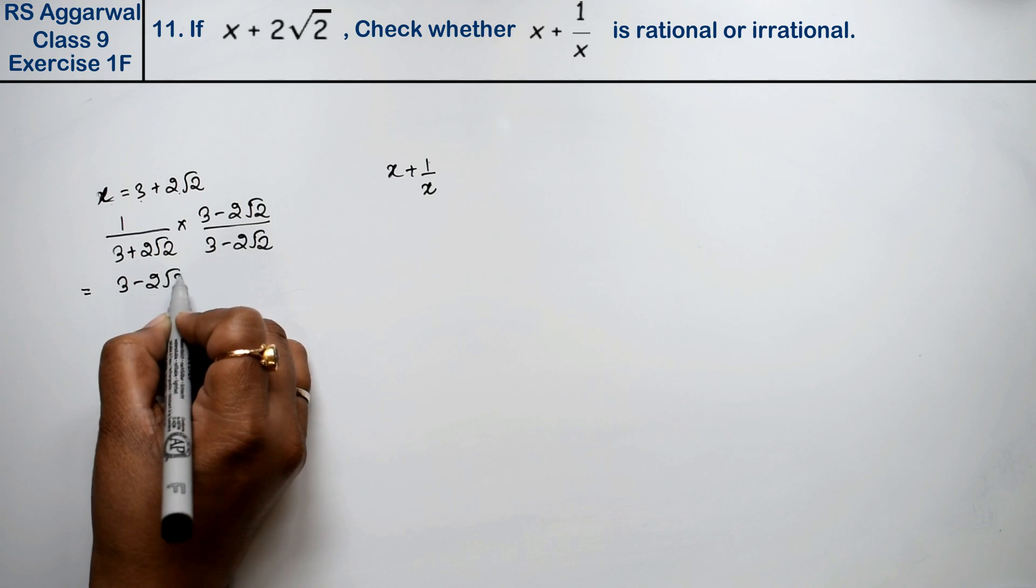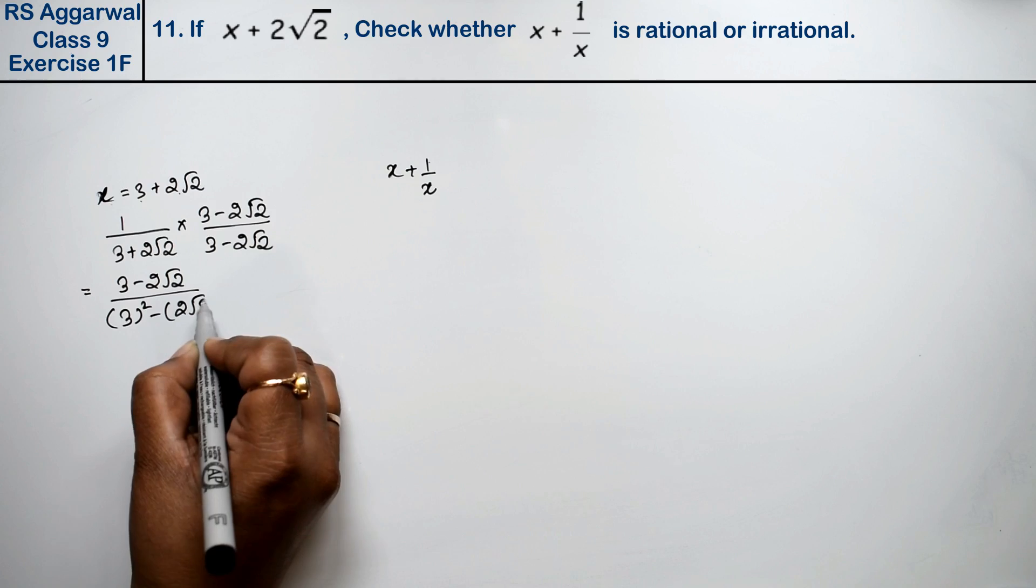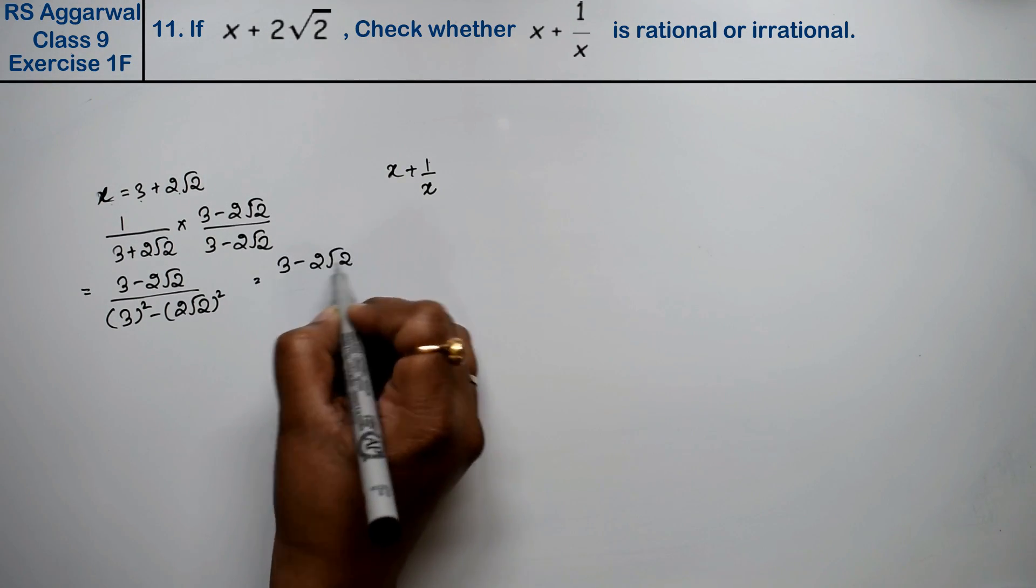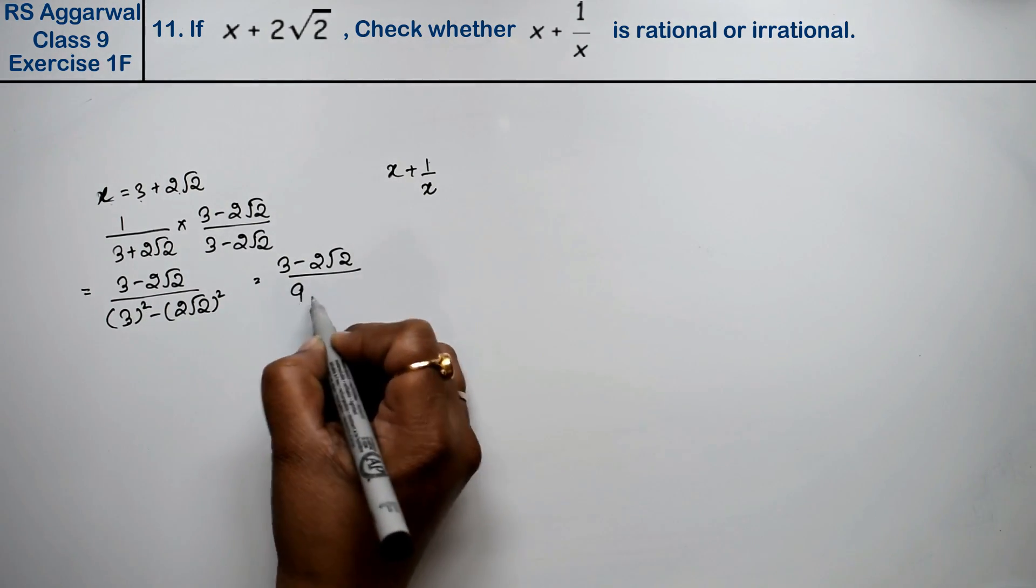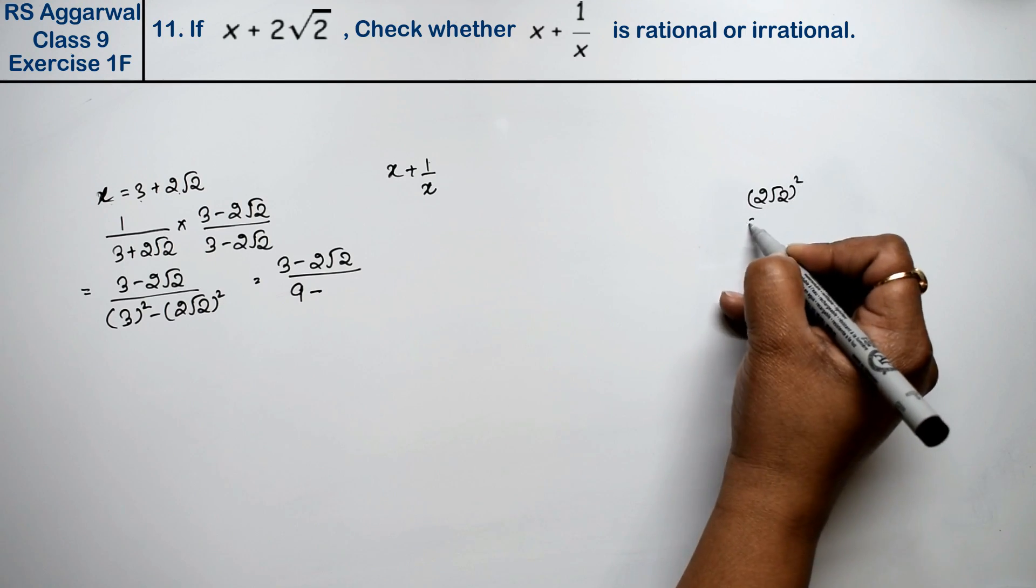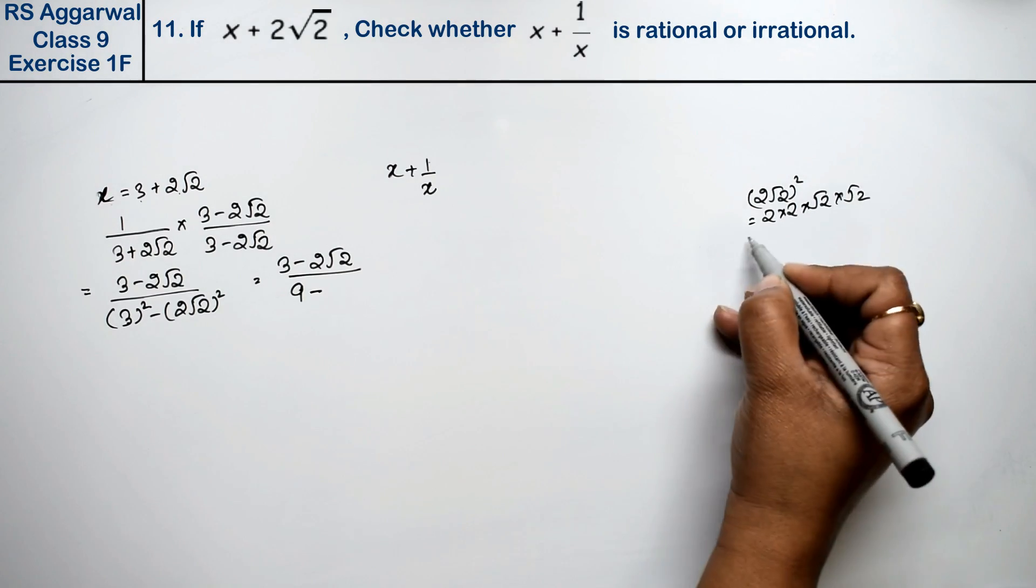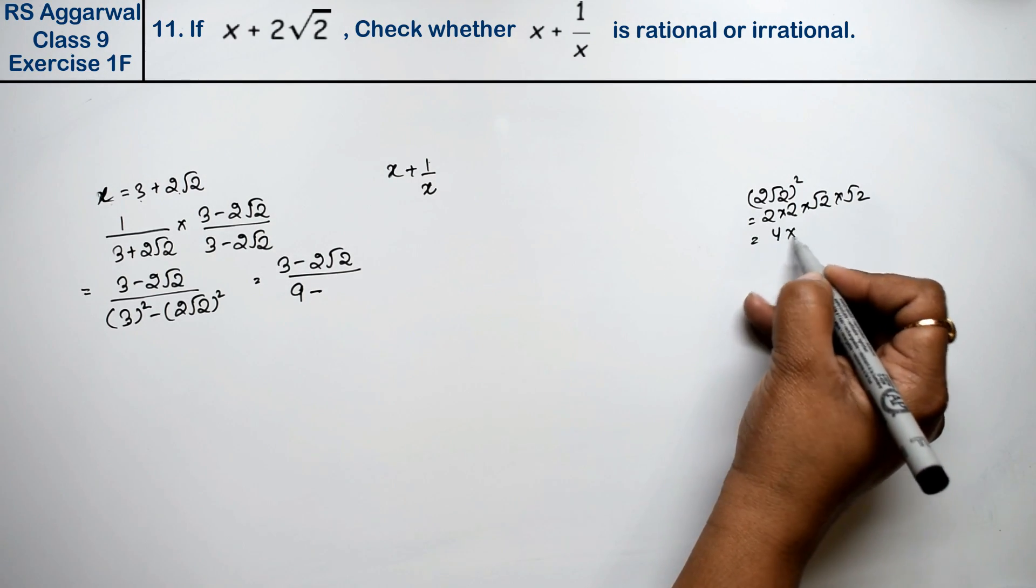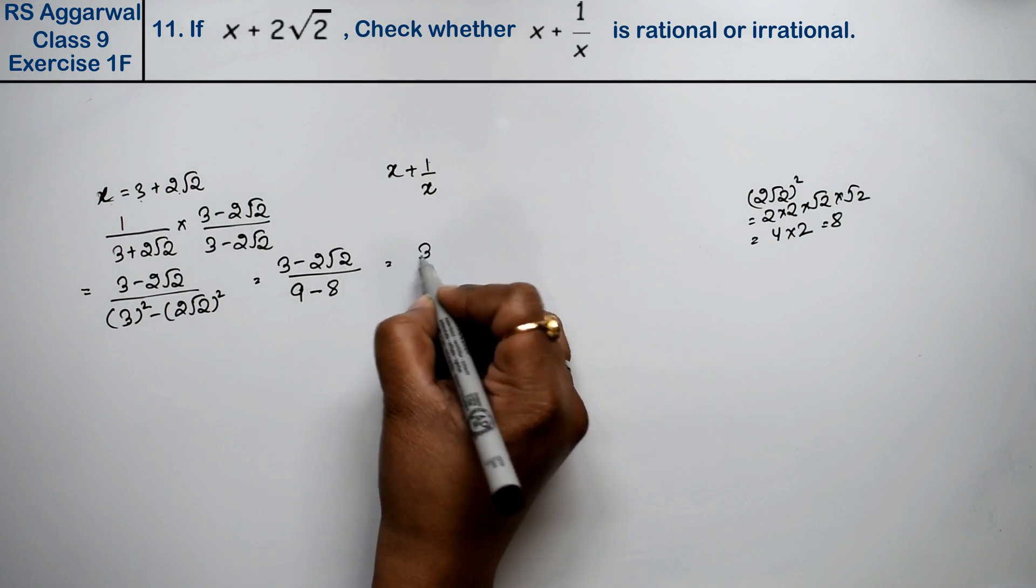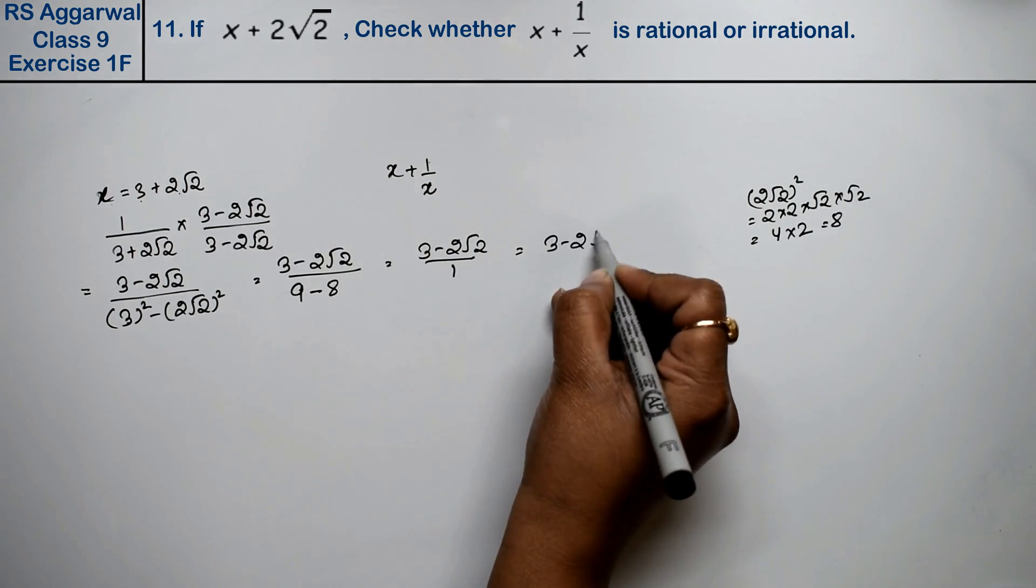If we rationalize it, we will get 3 minus 2 root 2 upon 3 square minus 2 root 2 square. This is 3 minus 2 root 2 upon 9 minus 8, which equals 3 minus 2 root 2.